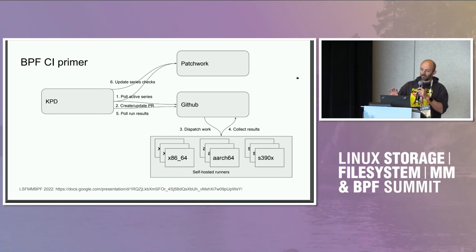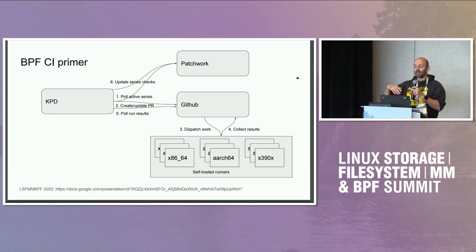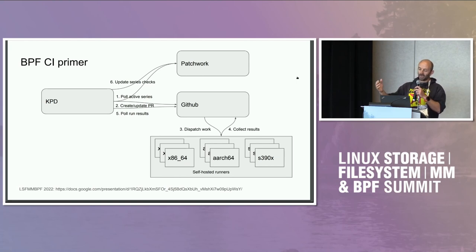Essentially what BPF CI does: we have three components — patchwork on one side, GitHub and KPD (kernel patches daemon). KPD pulls patchwork for series that are active, that they get from the kernel mailing list. When we see a new series or an update, we take the patches, apply them on top of the BPF or BPF Next branch, apply some changes to be able to run tests, and create a PR on GitHub. GitHub kicks the GitHub Action workflow that dispatches work on different GitHub runners across different architectures, gets the result back, KPD gets that, and sends the result back to patchwork so maintainers can get an overview of the changes.